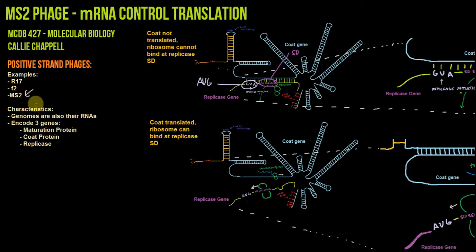And they have two big characteristics. The first is that their genomes are also their mRNAs, which is really cool, especially if you're interested in the interaction between mRNA and translation, and also that they only encode three genes: a maturation protein, a coat protein, and a replicase.